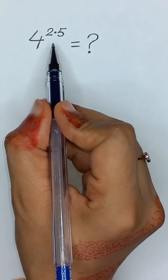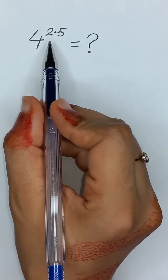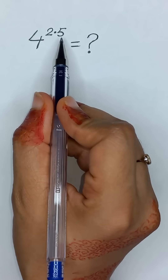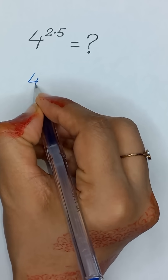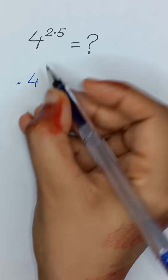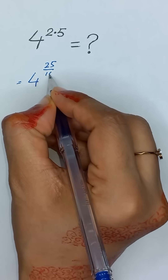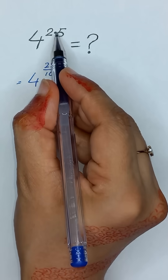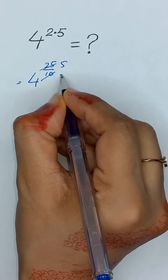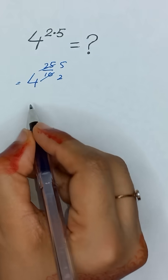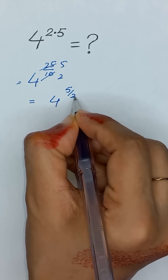What is 4 to the power 2.5 without using a calculator? First, 2.5 can be written as 25 divided by 10. Simplifying, 25/10 reduces to 5/2, so 4 to the power 2.5 is equal to 4 to the power 5 divided by 2.